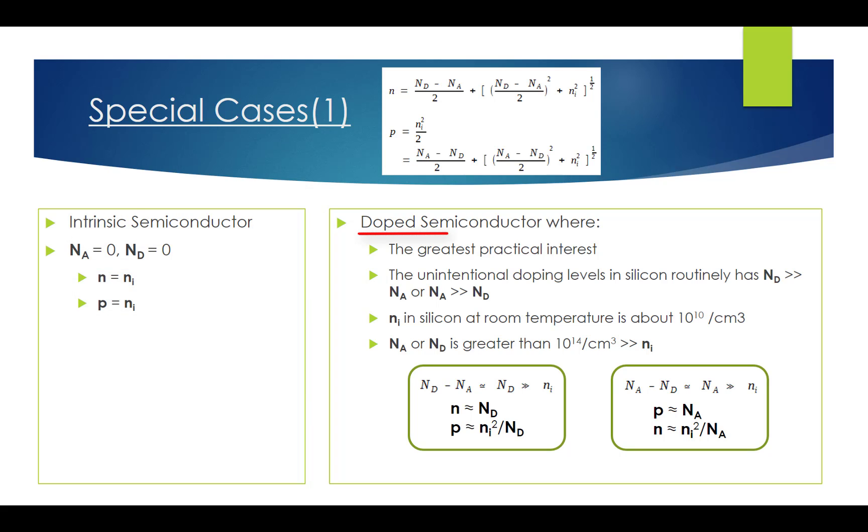The second special case has the greatest practical interest. The unintentional doping levels in silicon are such that the controlled addition of dopants routinely has Nd far greater than Na or Na far greater than Nd. The intrinsic carrier concentration ni in silicon at room temperature is about 10 to the power of 10 atoms per cubic centimeter. On the other hand, the dominant doping concentration Nd or Na is usually greater than 10 to the power of 14 atoms per cubic centimeter.